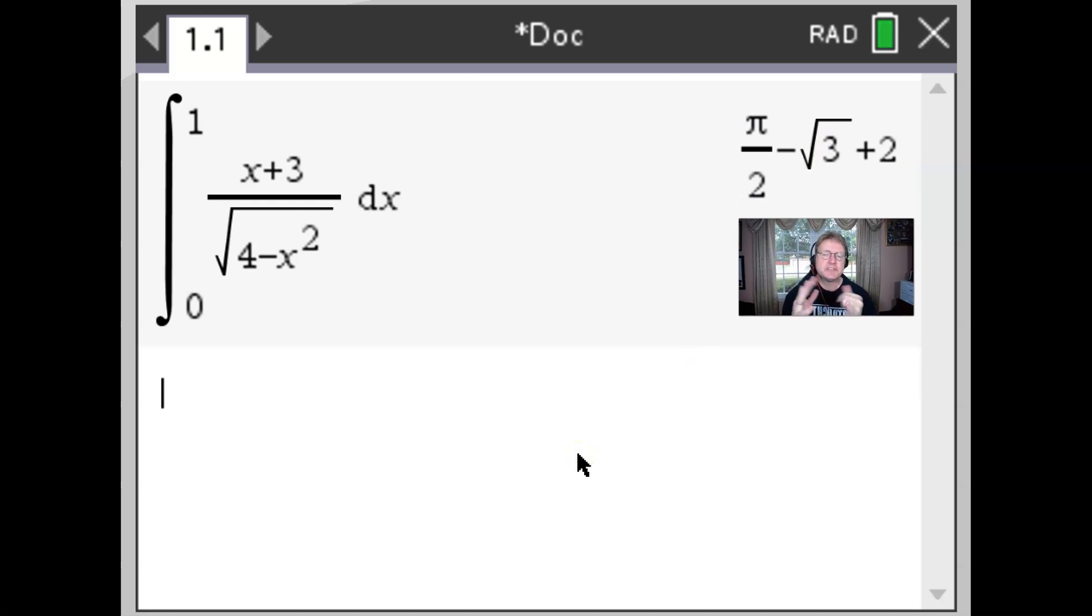and you notice that we have the π over 2 that's positive, the square root of 3 that's negative, and the plus 2. Obviously we got these values in a slightly different order but this is the way that you can always check your answers to make sure that you didn't make a mistake. Sometimes your answer on the calculator might differ a little bit but still be correct. We're going to talk about how to address that in later videos.